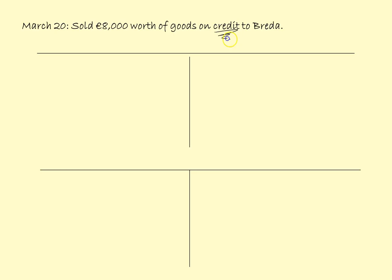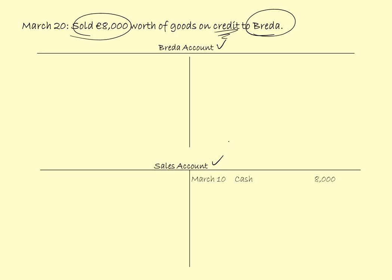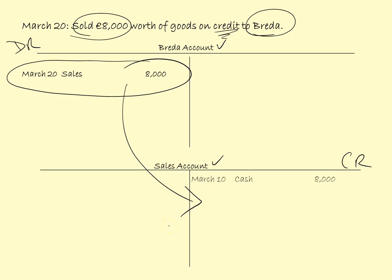March the 20th: sold 8,000 euro worth of goods on credit to Brida. On credit means no money changed hands, so we need to open up an account for Brida. We have the sales account already. You always credit sales, so therefore we must be debiting Brida's account. On the debit side of Brida's account: March the 20th, Sales, 8,000. And double entered into the credit side of sales: March the 20th, Brida, 8,000.